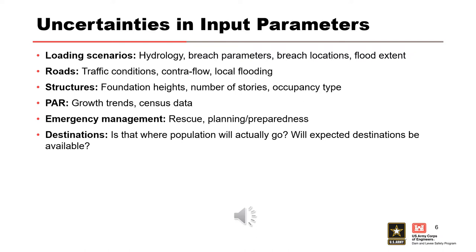Then we have destinations. There's an element of both natural variability and knowledge uncertainty here. Where are people going to go? If I approach a flooded road, a lot of people don't know what to do and they panic. Are they going to get out of their vehicle and walk? Are they going to turn around? Are they going to try to drive through the flooded road? We can reduce some of that uncertainty by talking with emergency managers to understand where they would direct people during evacuations, and then start modeling traffic accordingly.